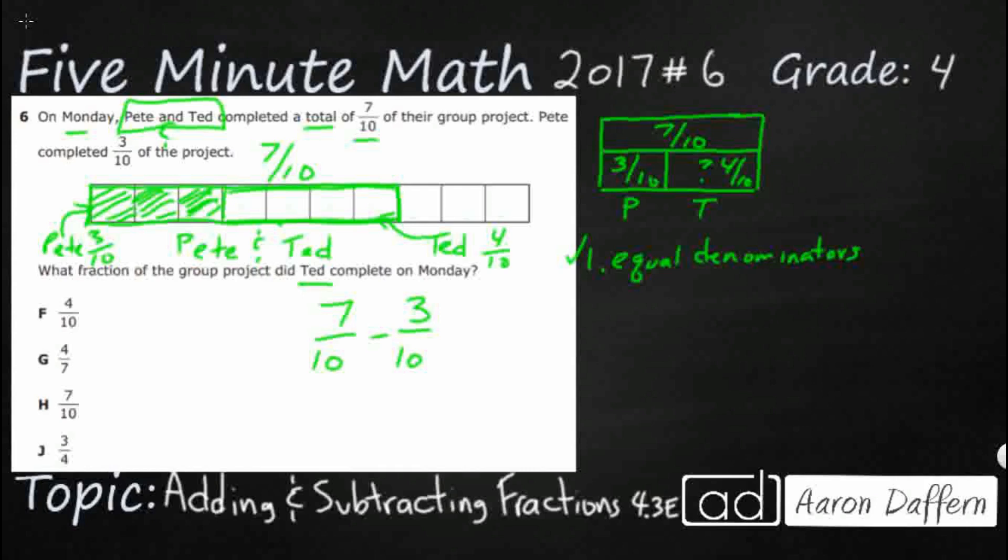Sometimes you might get one-half minus one-fourth or three-fifths minus one-third. If you do not have equal denominators, you need to stop right there. You need to change one or both into equivalent fractions so that the denominators match. But we do have equal denominators.